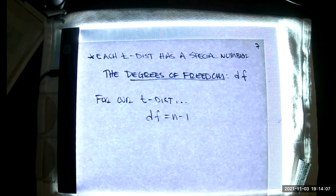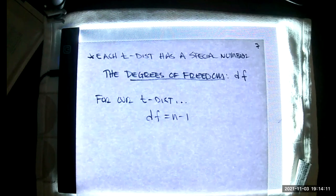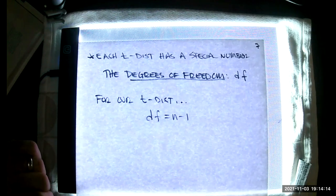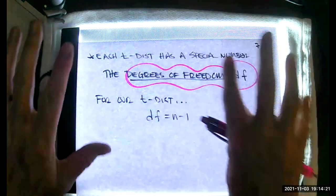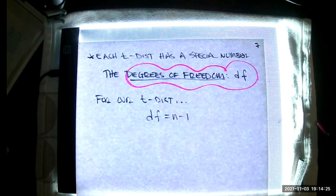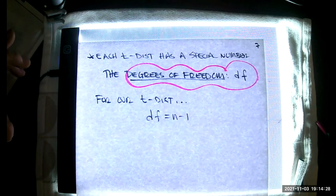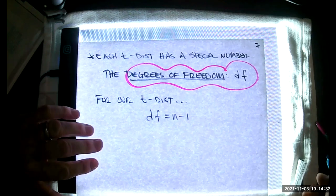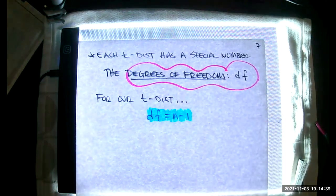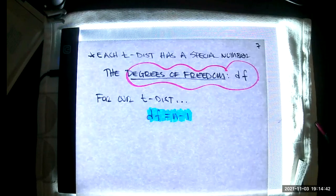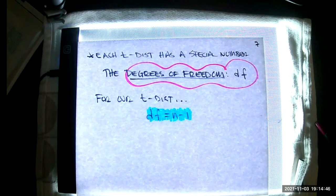The T distribution has a special number. Every T distribution does, and it's called the degrees of freedom or DF. This notion of degrees of freedom is a very important notion in the grander level of physics and the understanding of the natural world. For us, it's just a little simple formula. For our T distribution in this section, it's a very easy value to find. It's the sample size minus one. It's really the number of choices you get to make before reality forces you to do something.